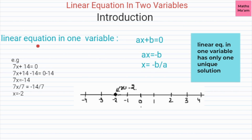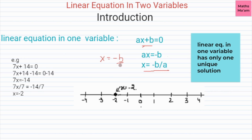Before starting linear equation in two variables, we should know what is a linear equation in one variable. One variable means either x, y, or z — any variable. We can represent a linear equation in one variable as ax plus b is equal to zero, where a is the coefficient of x, b is a constant term, and x is the variable. We can move the constant term to the right side and find the value of x, which gives x equals minus b by a — only one value.